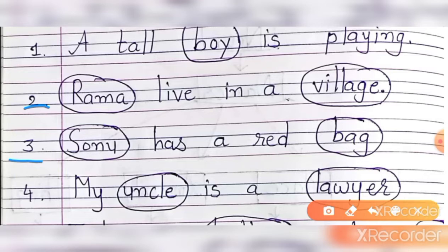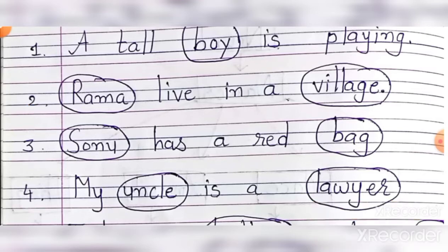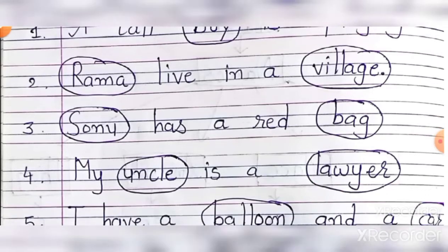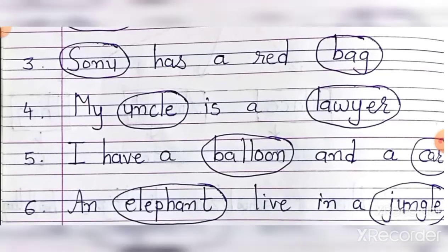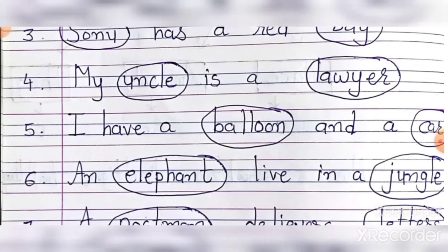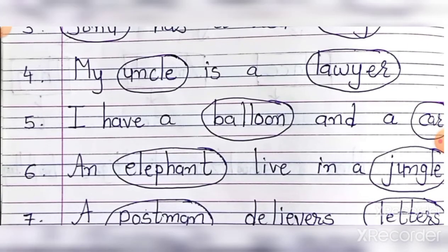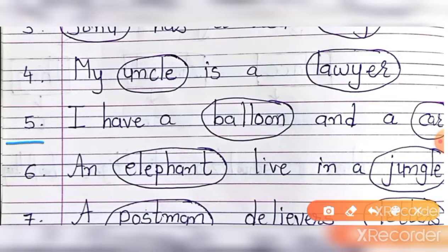My uncle is a lawyer. Toh uncle woh bhi naam hai, aur lawyer woh bhi naam hai, toh dono ke upar aayega circle. I have a balloon and a car — toh is sentence mein dono cheezein hain, woh naam hain, kaun-kaun si thing hai — balloon and car, toh dono ke upar aayega circle.